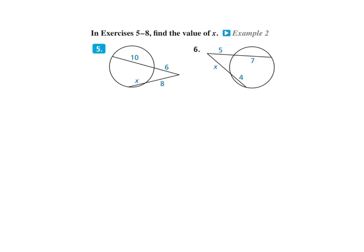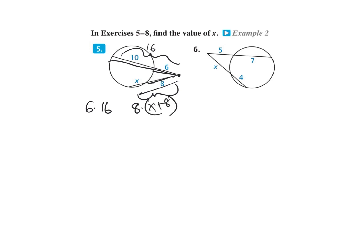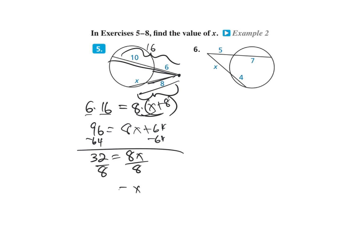Number 5: this vertex is on the outside, so you take the part times the whole. The part is 8 and the whole is X plus 8. That equals the part 6 times the whole 16: 6 times 16 is 96. Distribute: 8X plus 64 equals 96. Subtract 64: 32 equals 8X. Divide by 8, and X equals 4.